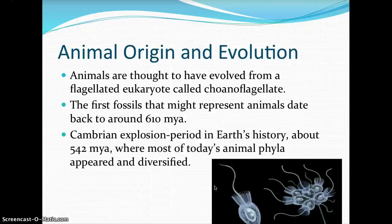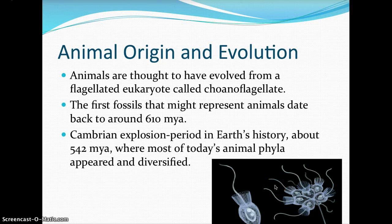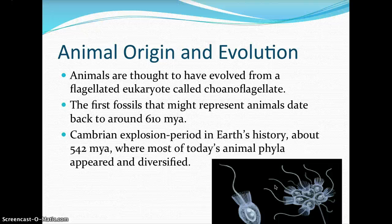Animals are thought to have evolved from flagellated eukaryotic cells called choanoflagellates. These choanoflagellated cells are seen in our earliest animals — sponges of phylum Porifera — because Porifera lacks true tissues but is made up of cells called choanocytes. The first fossils that might represent animals date back to around 610 million years ago. During the Cambrian period, 542 million years ago, most of today's animal phyla emerged and started to diversify on earth.